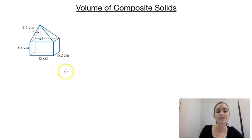I've got one last shape solid to find the volume of. So this one is a rectangular prism on the bottom and then we've got a rectangular pyramid on the top. So to find the volume of the rectangular prism on the bottom we just multiply the three dimensions together so that would be 8.3 times 15 times 6.2.